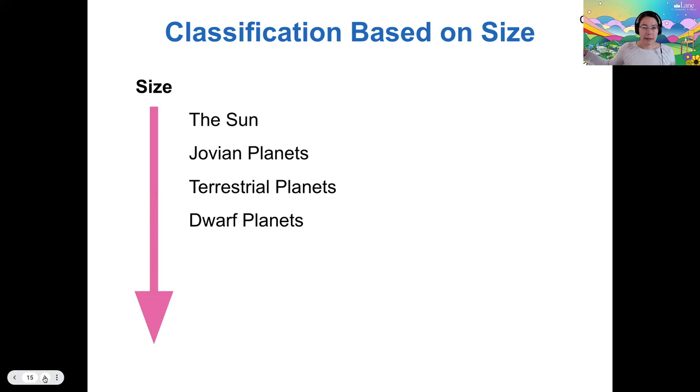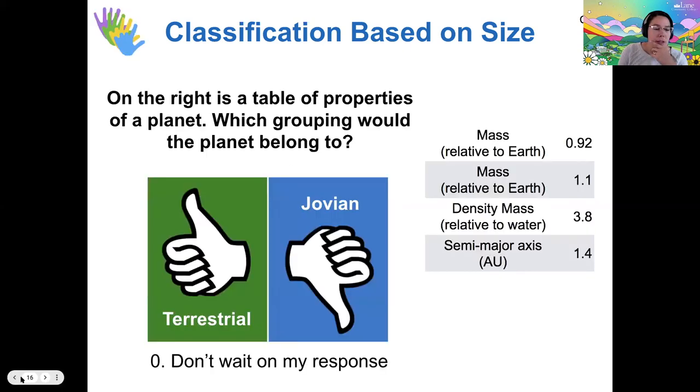Okay. So if we just classify things in the solar system based on their size, of course, the sun's going to be largest. Jovian planets are smaller than the sun, but still quite sizable. Terrestrial planets are smaller and dwarf planets are even smaller than that. So based on the data that you see here, and it's just fine if you guess, but consider carefully the numbers, if you can, which type of planet would you think this would be and why?